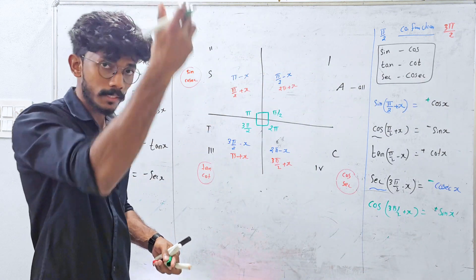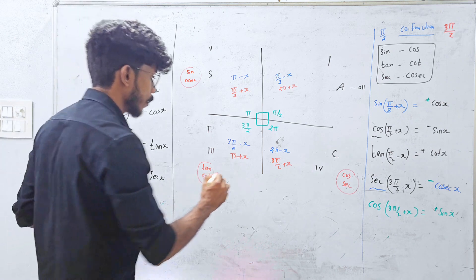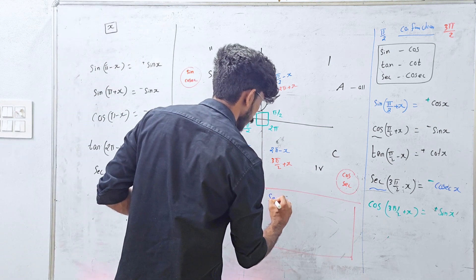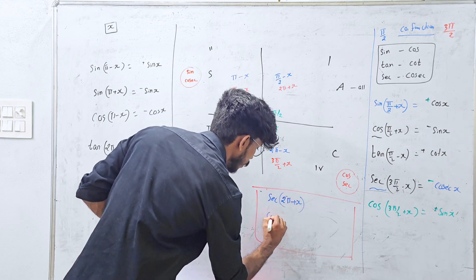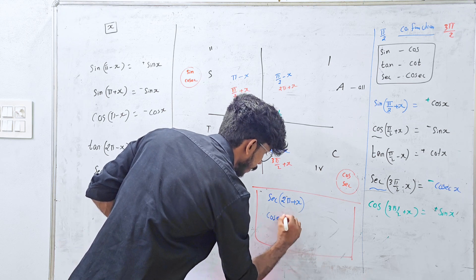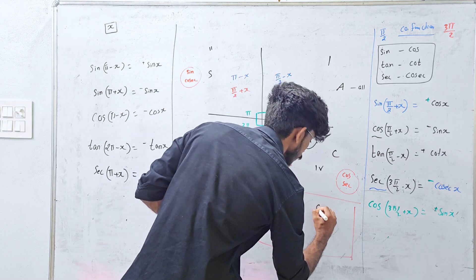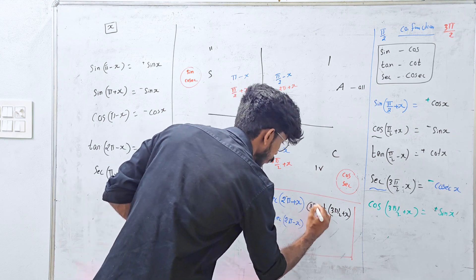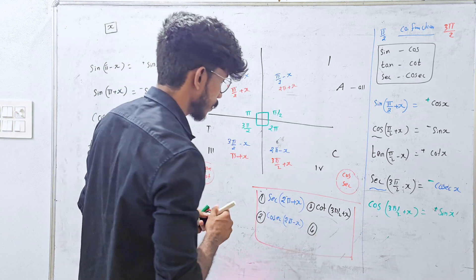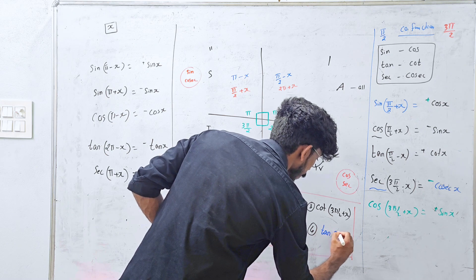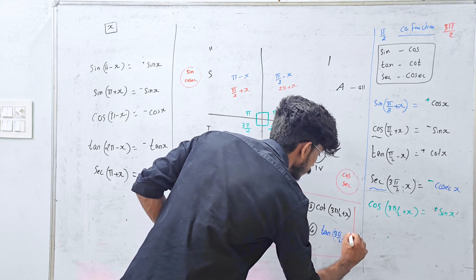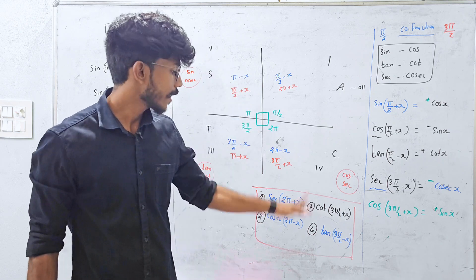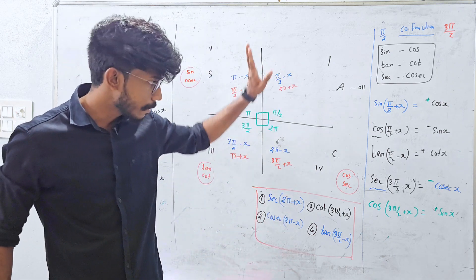Now if you have a question you have to solve it — that's your homework. Solve: seek(2π + x), cos(2π − x), cot(3π/2 + x), and tan(3π/2 − x). You have to answer questions 1, 2, 3, and 4.